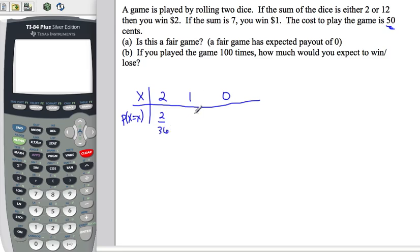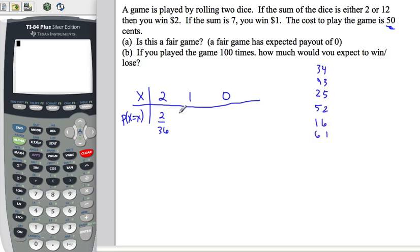To get $1, there are six ways to get a seven: three and four, four and three, two and five, five and two, six and one, one and six. That's six out of 36. So two plus six is eight, and 36 minus eight is 28 — there are 28 ways to lose your money.